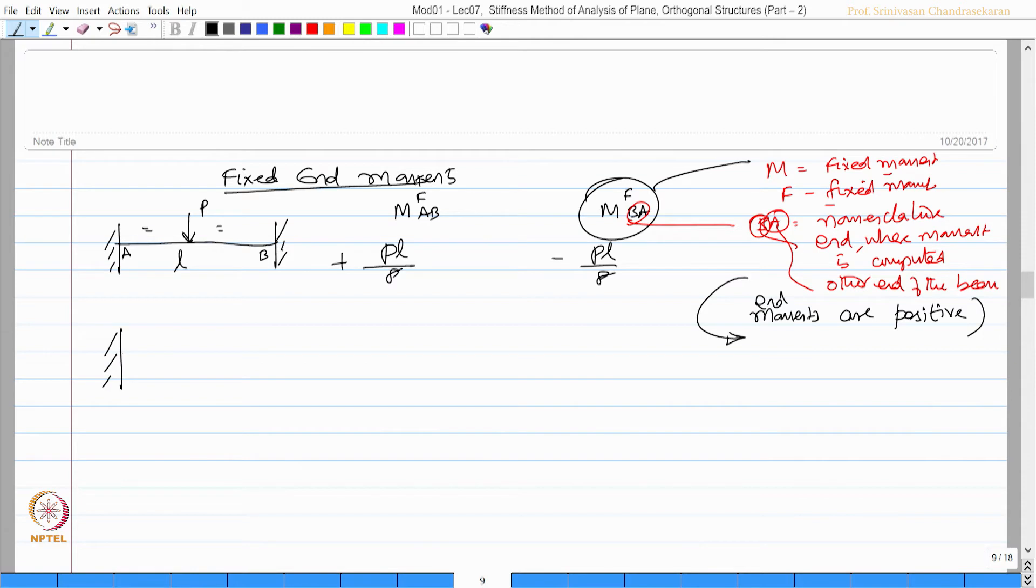Now I have fixed beam end AB, span L, subjected to uniform distributed load W. This will give me M_F^AB and M_F^BA. This will be plus WL²/12, this will be minus WL²/12. Similarly, this is also M_F^AB, this is M_F^BA.